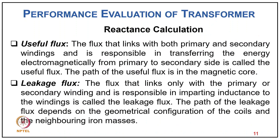For reactance calculation: the useful flux links with both primary and secondary windings and is responsible for transferring energy electromagnetically from primary to secondary side, with its path in the magnetic core. The leakage flux links only with the primary or secondary winding and is responsible for imparting inductance to the winding. The path of the leakage flux depends on the geometrical configuration of the coils and neighboring iron masses.